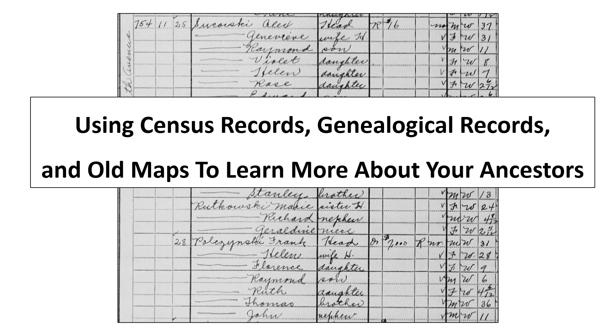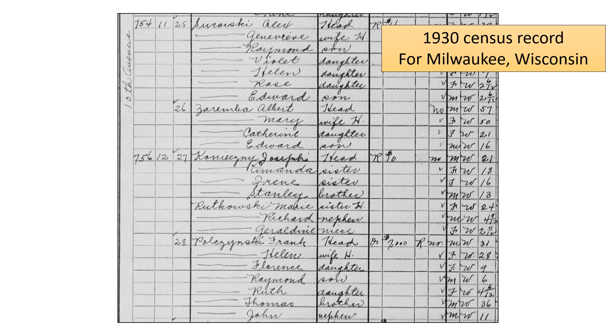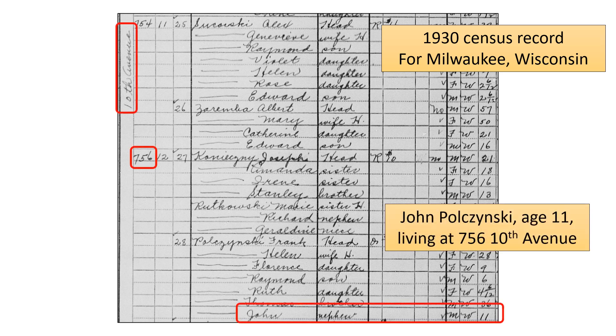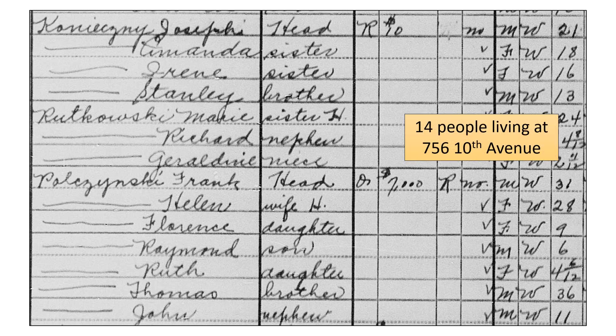We will start our investigation using census records. Since my dad's photo comes from 1925, let's start with a 1930 census record for Milwaukee, Wisconsin, where we see my dad at age 11 living at 756 10th Avenue. In 1930 there were 14 people all living together in the same house with my dad, which gives us a feel for how many of our Polish ancestors lived at this time.